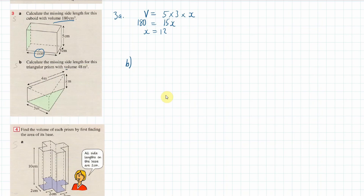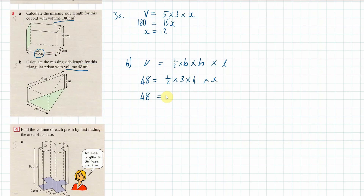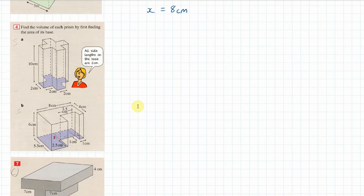For 3b, the volume of the triangular prism is 48. The formula is half times base times height times length, so 48 equals half times 3 times 4 times x. Multiplying the half by 4 gives 2, and 2 times 3 is 6, so 48 equals 6x. Dividing both sides by 6 gives x equals 8 centimeters.